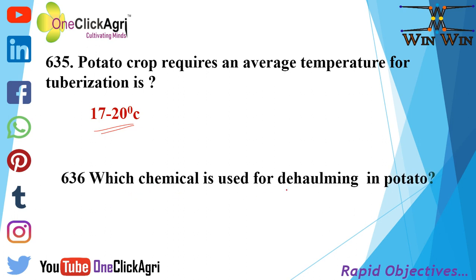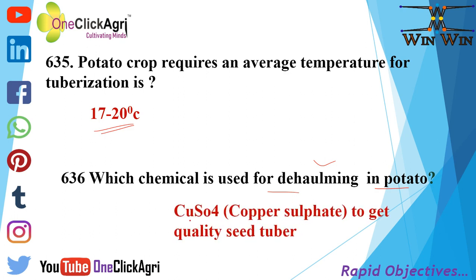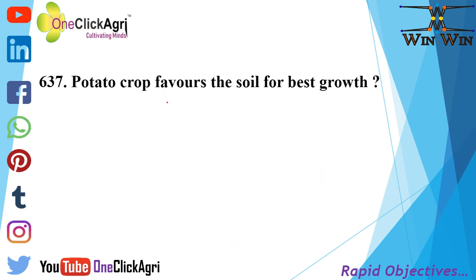Which chemical is used for de-haulming in potato? That is CuSO4 — Copper Sulphate — to get quality seed tubers. Potato crop favors Sandy Loam soil for best growth.